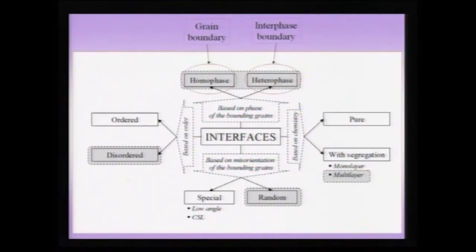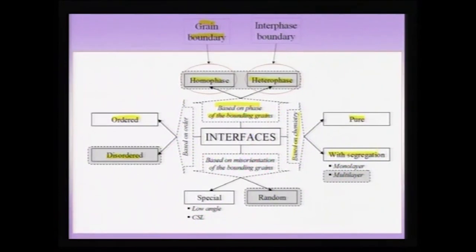To summarize, interfaces can be classified in various ways. Based on order, they can be classified as ordered or disordered. Based on the phase of the bounding grains, they can be called homophase or heterophase interfaces, with the grain boundary being a homophase interface. Based on chemistry, an interface can be pure or have segregation, which can be monolayer or multilayer. Based on the misorientation of the bounding crystals, we can have special or random interfaces. Special interfaces include low angle interfaces and coincidence site lattice interfaces, though being an elementary course, we shall not take up coincidence site lattices in detail.